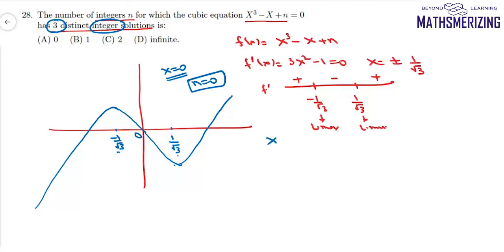So in that case, we'll get this equation as x³ - x = 0. So the three roots are 0 and plus minus 1, and then there is no other value of n possible.